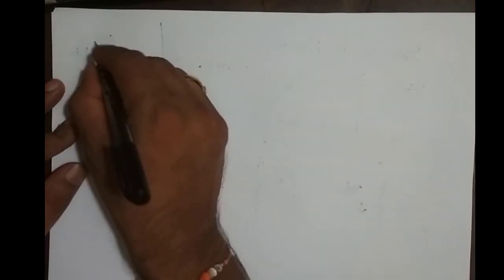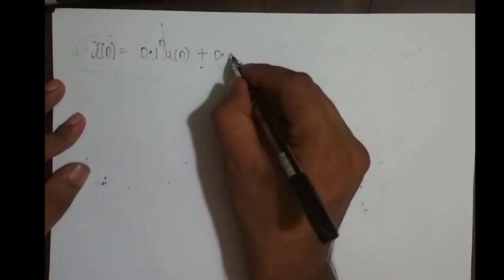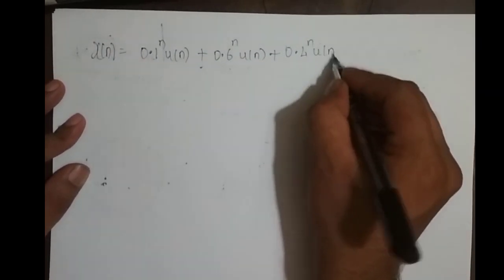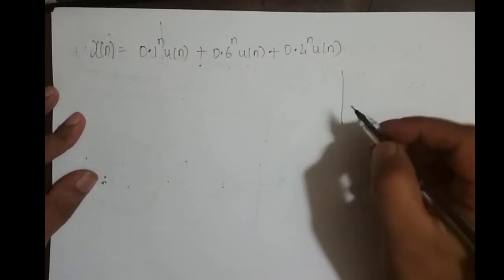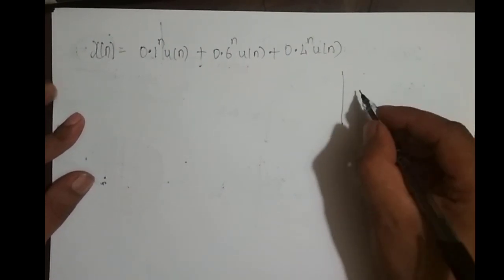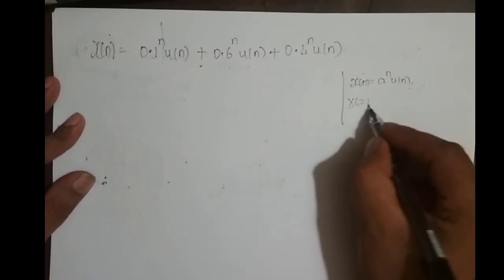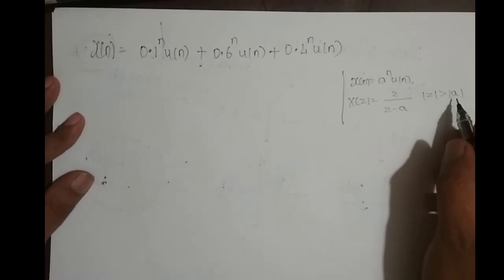Now I want to say a few more points on ROC. Consider an infinite length right-sided sequence: x(n) = (0.1)ⁿ u(n) + (0.6)ⁿ u(n) + (0.4)ⁿ u(n). Finding the Z-transform is not a big deal — we already have the standard form. The Z-transform of aⁿ u(n) is Z/(Z − a), and its ROC is |Z| > |a|, i.e., outside the circle with radius a.